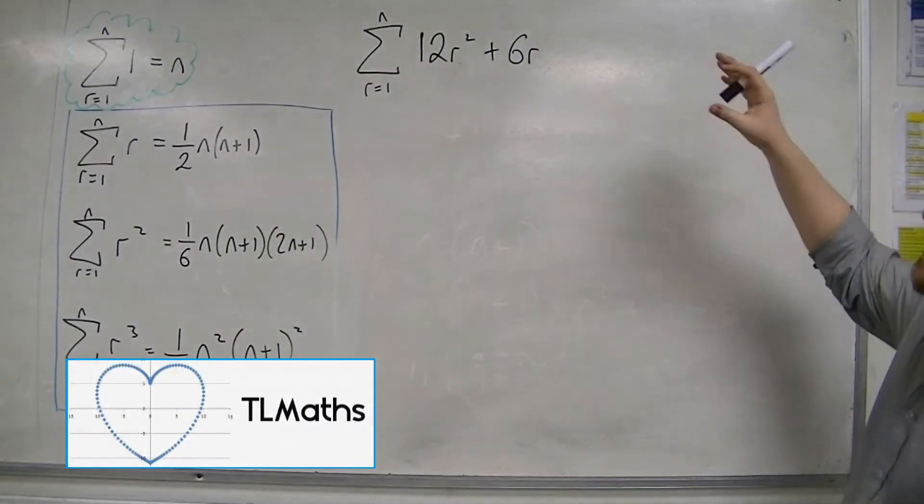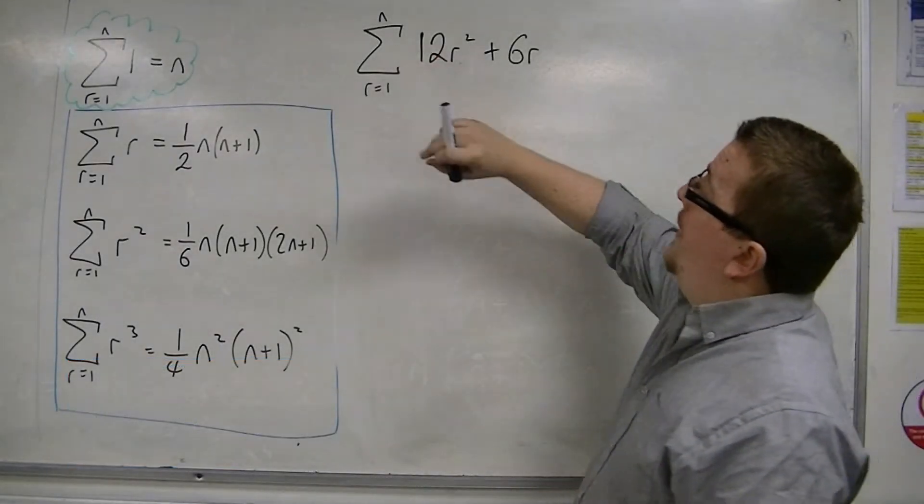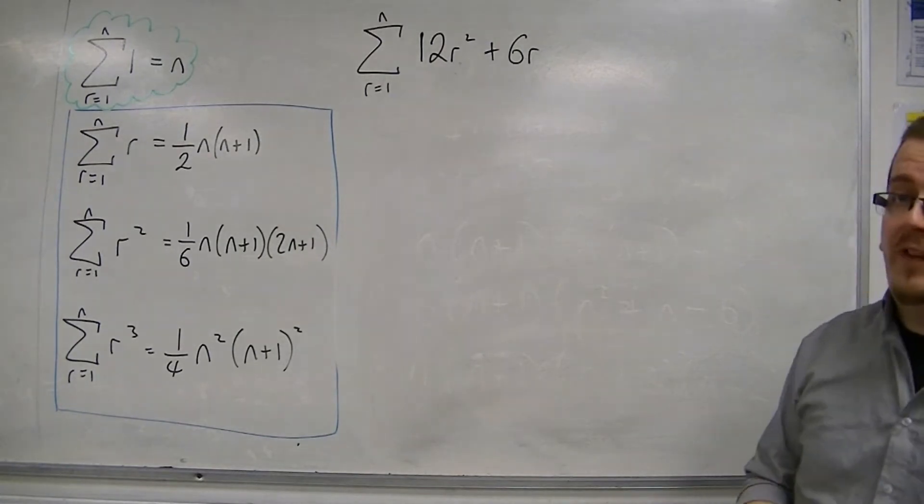In this example, I'm going to be looking at the sum from r is 1 to n of 12r squared plus 6r.